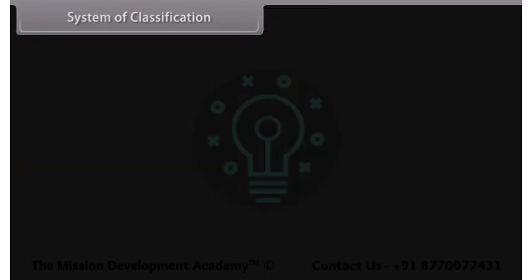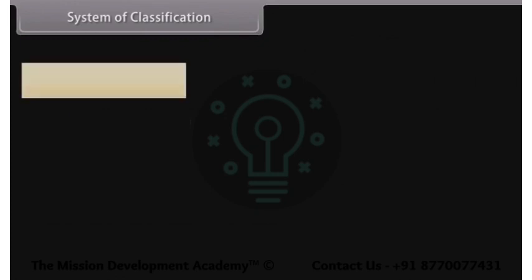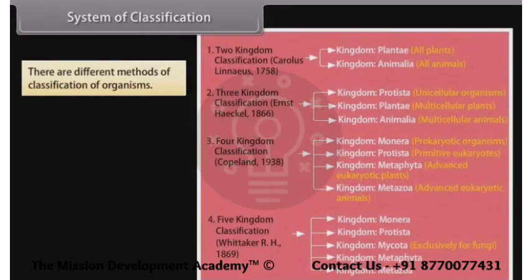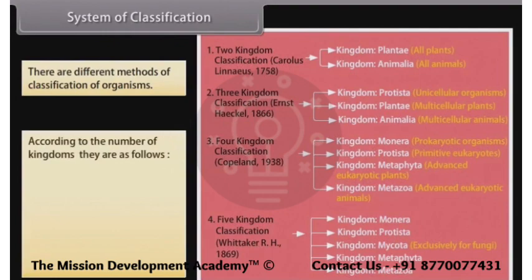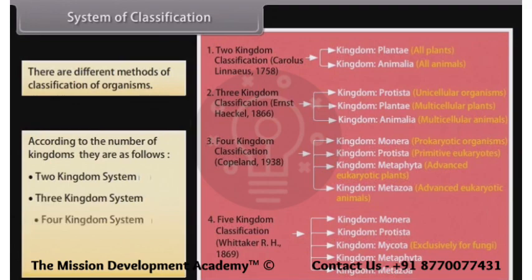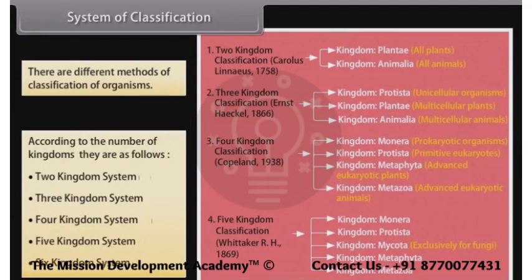There are different methods of classification of organisms. According to the number of kingdoms, they are as follows: Two Kingdoms System, Three Kingdoms System, Four Kingdoms System, Five Kingdoms System, and Six Kingdoms System.